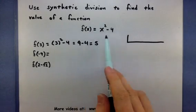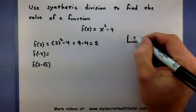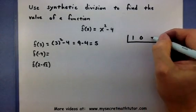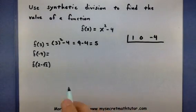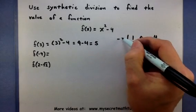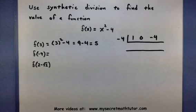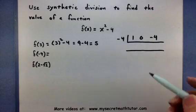So my original function is going to end up in my division bar. So 1x squared, no x's, and a minus 4. And I'm going to put in the minus 4, since that's the value I want to know about.